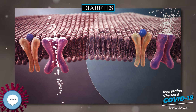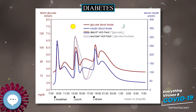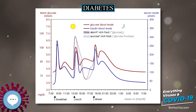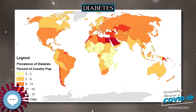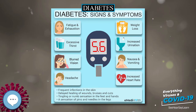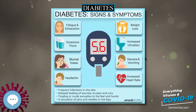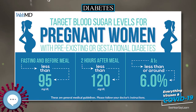Diabetes mellitus is classified into four broad categories: type 1, type 2, gestational diabetes, and other specific types. The other specific types are a collection of a few dozen individual causes. Diabetes is a more variable disease than once thought and people may have combinations of forms. The term diabetes, without qualification, refers to diabetes mellitus.